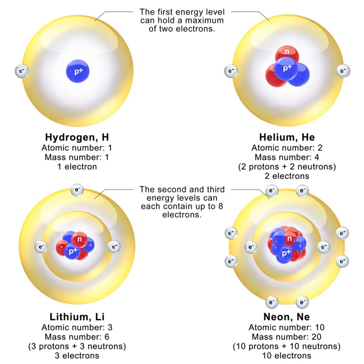A thermal neutron is a free neutron that is Boltzmann distributed with kT = 0.0253 eV at room temperature. This gives a characteristic speed of 2.2 kilometers per second. The name 'thermal' comes from their energy being that of the room temperature gas or material they are permeating. After a number of collisions with nuclei, neutrons arrive at this energy level, provided that they are not absorbed.